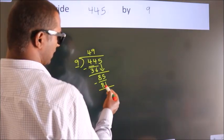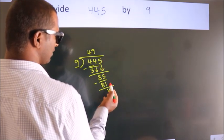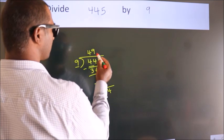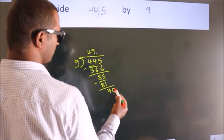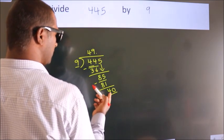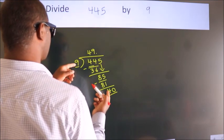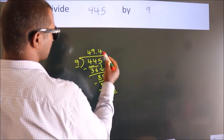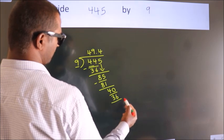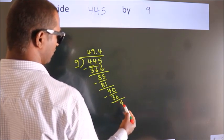After this, there are no more numbers to bring down. So what we do is put a dot and take 0, giving us 40. A number close to 40 in the 9 times table is 9 fours — 36. Now we subtract and we get 4.